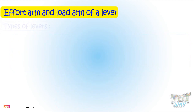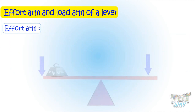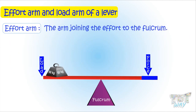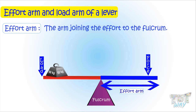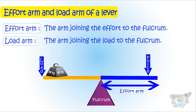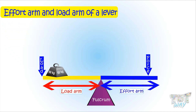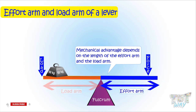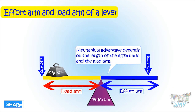Now let's learn about the effort arm and load arm of the lever. The arm joining the effort to the fulcrum — or the distance between the effort and the fulcrum — is the effort arm. The arm joining the load and the fulcrum, or the distance between the load and the fulcrum, is known as the load arm. It is the length of the load arm and effort arm that decides the mechanical advantage of that type of lever.